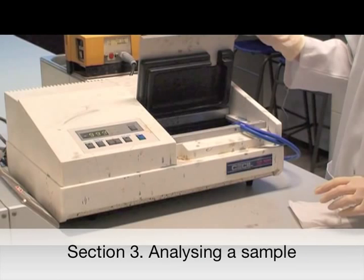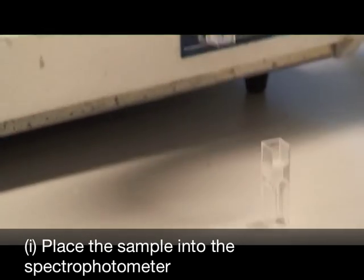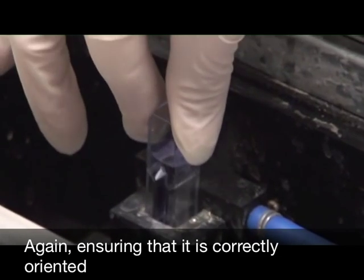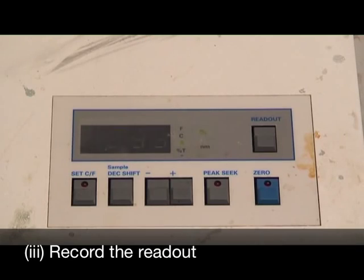Section 3: Analyzing a sample. Place the sample into the spectrophotometer. Again, ensuring that it is correctly oriented. Close the lid and record the readout.